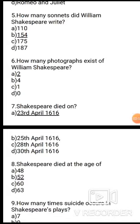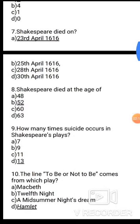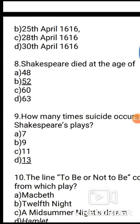Question 8: Shakespeare died at the age of — A. 48, B. 52, C. 60, D. 63. The correct answer is 52. Shakespeare died at the age of 52 years.